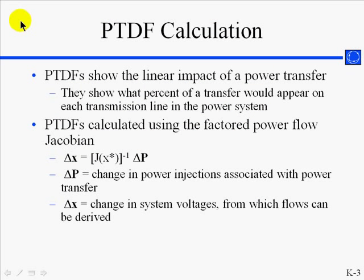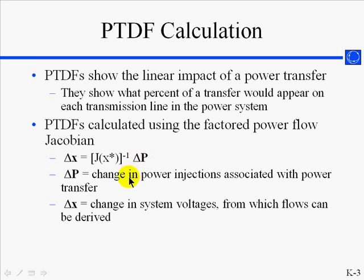The PTDF calculation shows what percent of a transfer between a buyer and a seller would appear on each transmission line in the power system. The PTDF is calculated using the Jacobian matrix from a solved power flow solution. The delta P is a change in power injections associated with the transfer between the buyer and seller, and the delta X is a change in system voltages, and from here the flows can be derived.